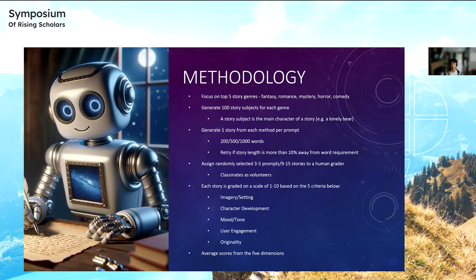To conduct this experiment, I generated 100 story subjects for each of the top five story genres, as you can see above. A story subject is the main character of a story, like a lonely bear. For each of these story subjects, each method generates one story with a given length, which is either 200, 500, or 1,000 words. I have to make sure that the story length is within 10% of that given word requirement. After that, I randomly assign three to five prompts, or nine to fifteen of those stories, to a human grader. Those human graders were my classmates, who I recruited as volunteers. Each story is graded on a scale of one to 10, based on the five criteria below. To get a composite score, we just average the scores from all five dimensions.